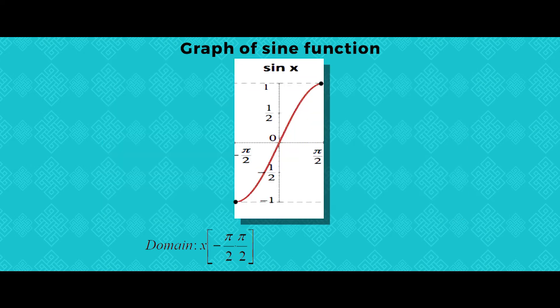After imposing the restriction, you can check by drawing a horizontal line and it will touch only a single point, which means it has become a one-to-one function. For a particular value of y, there is only one value of x, meaning it has become a one-to-one function, and the sine function will have its inverse.